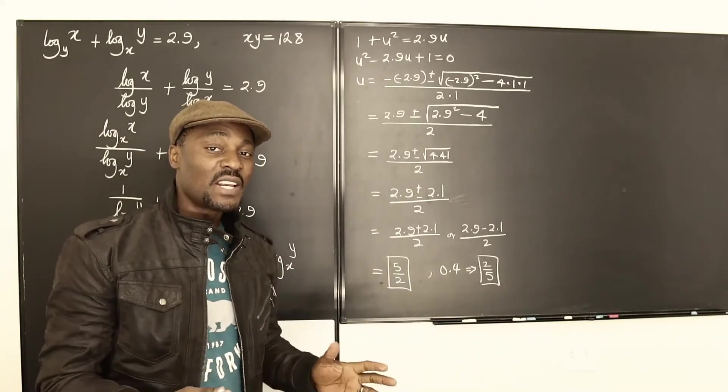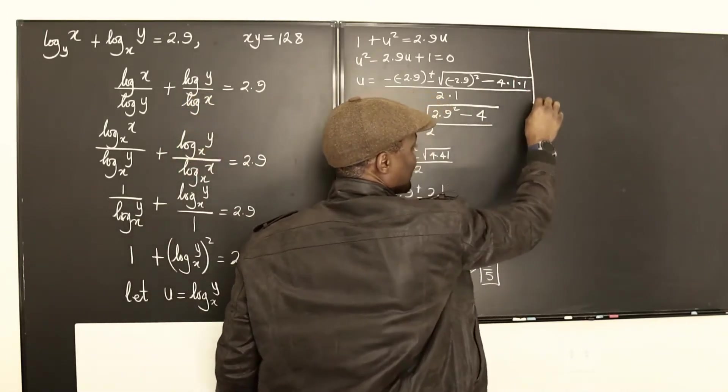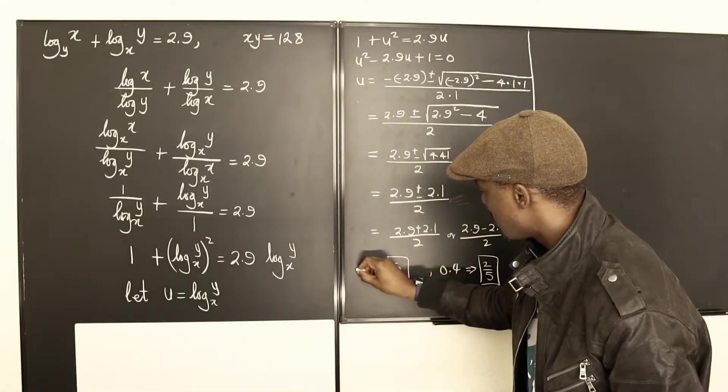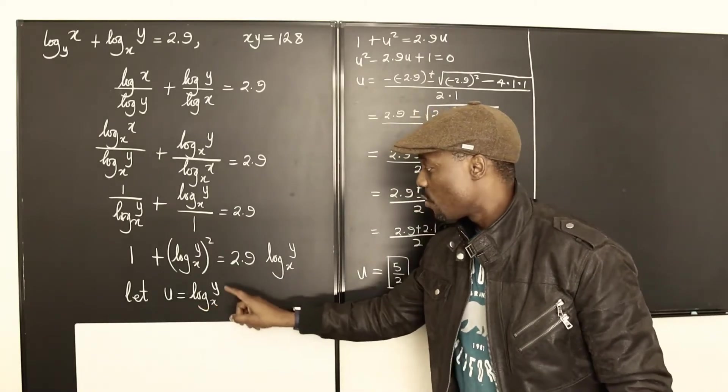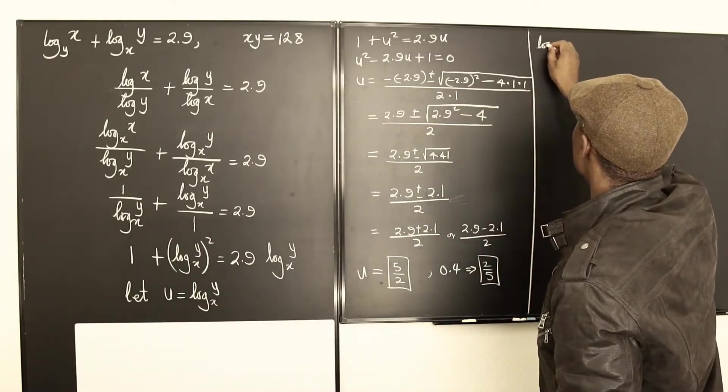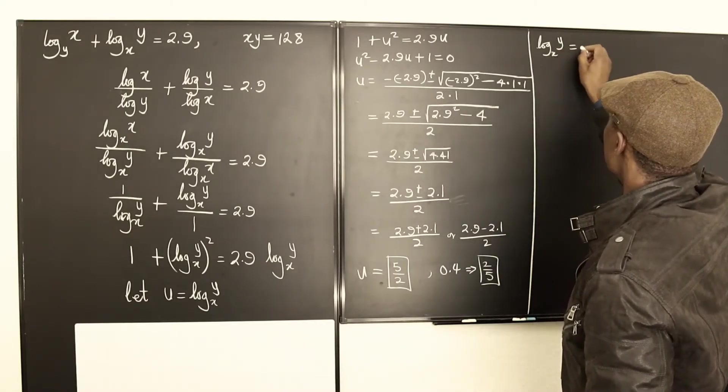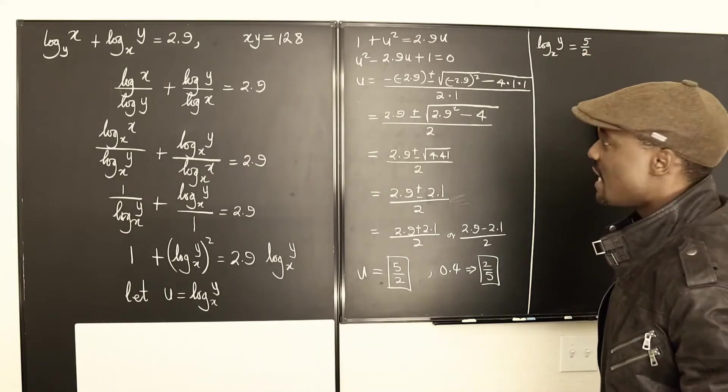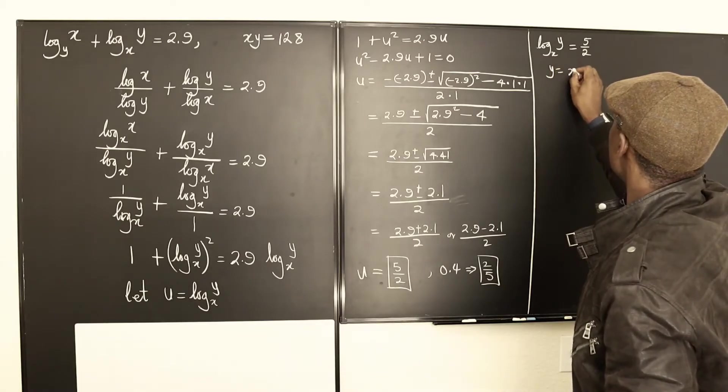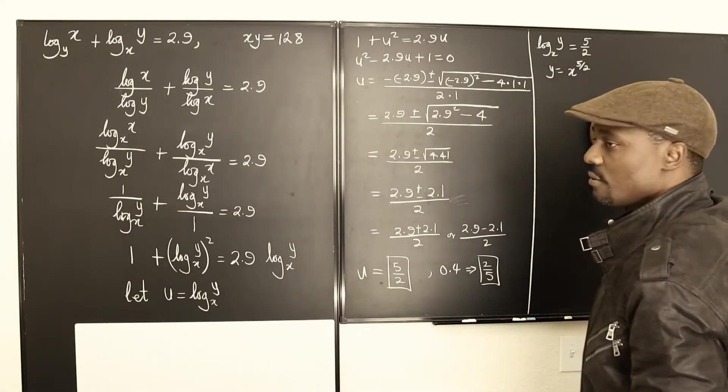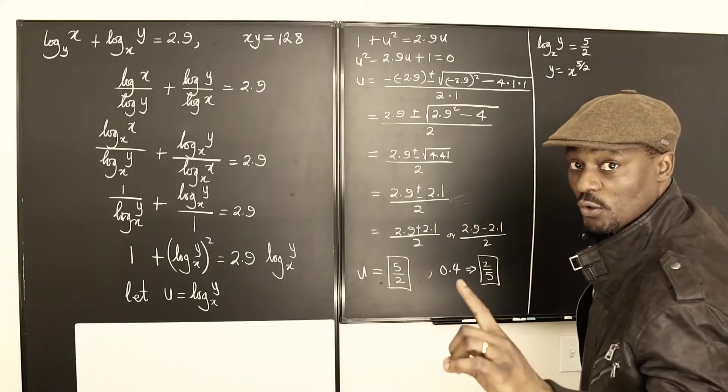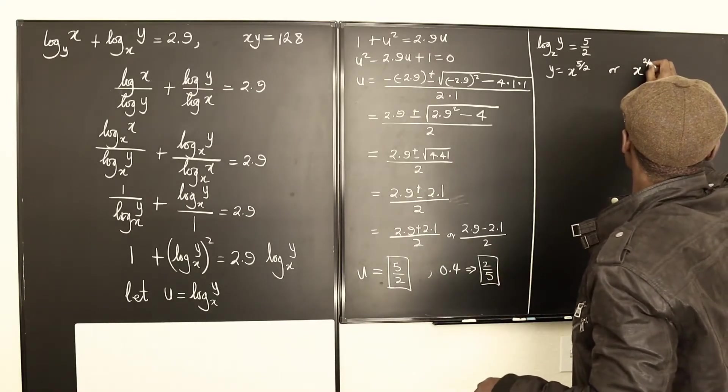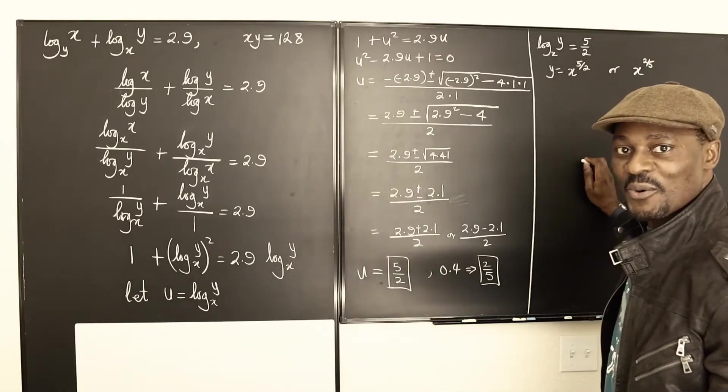We want to find x and y. So at this point, the answer we have is u. This is our u. And u is log y base x. So we say log y base x is equal to 5 over 2. It simply means that y is equal to x to the 5 over 2. It also means or is equal to x to the 2 over 5. Those are the two possible answers that we could get.